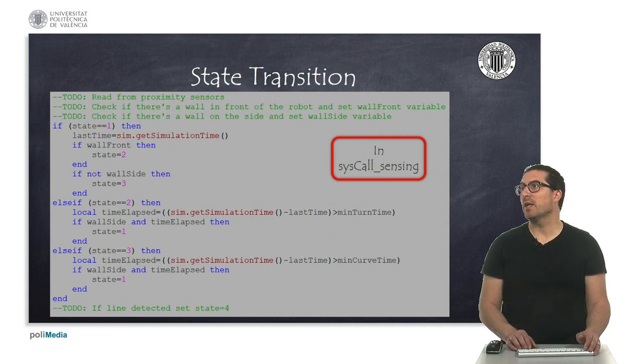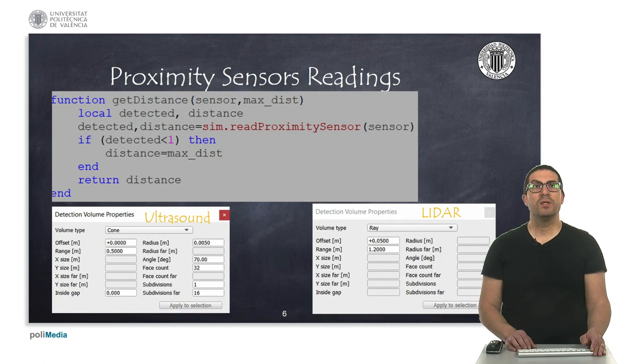At the end of the function, you also need to implement the condition. If you have detected the line, then you have to set the state equal to four.